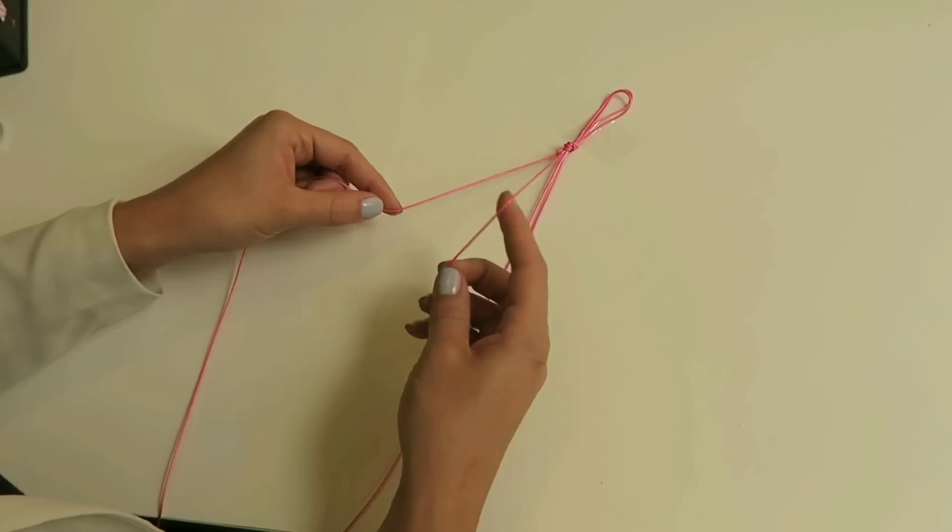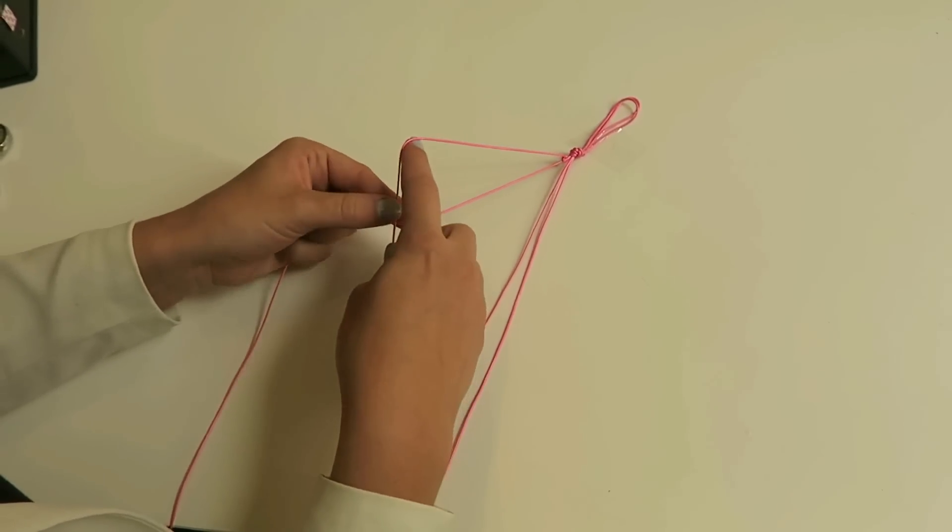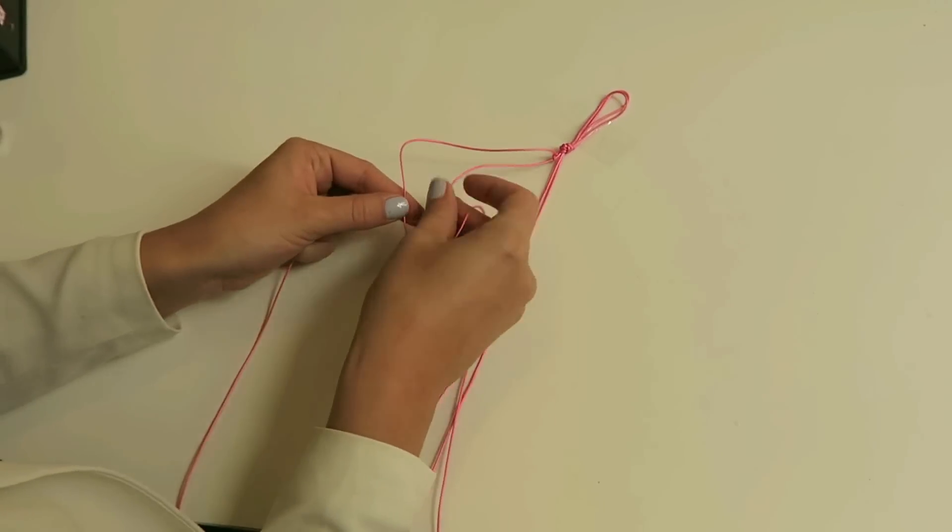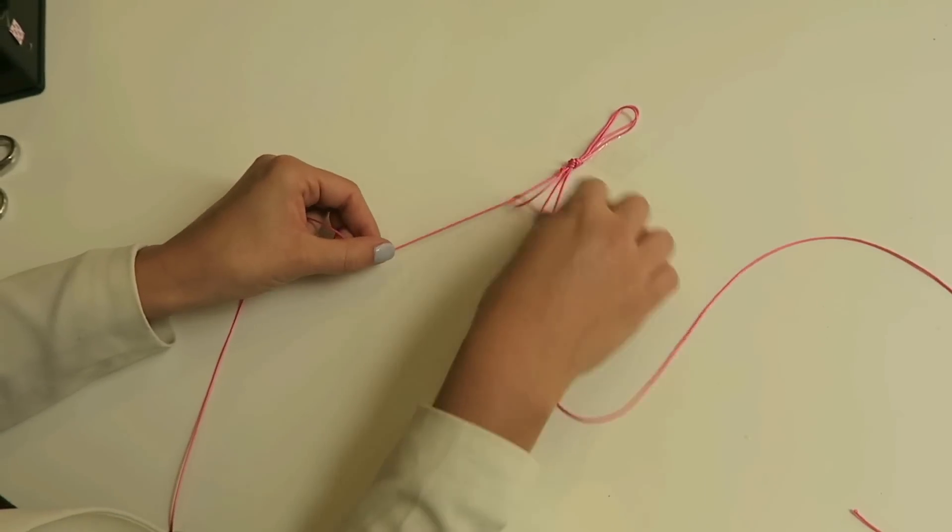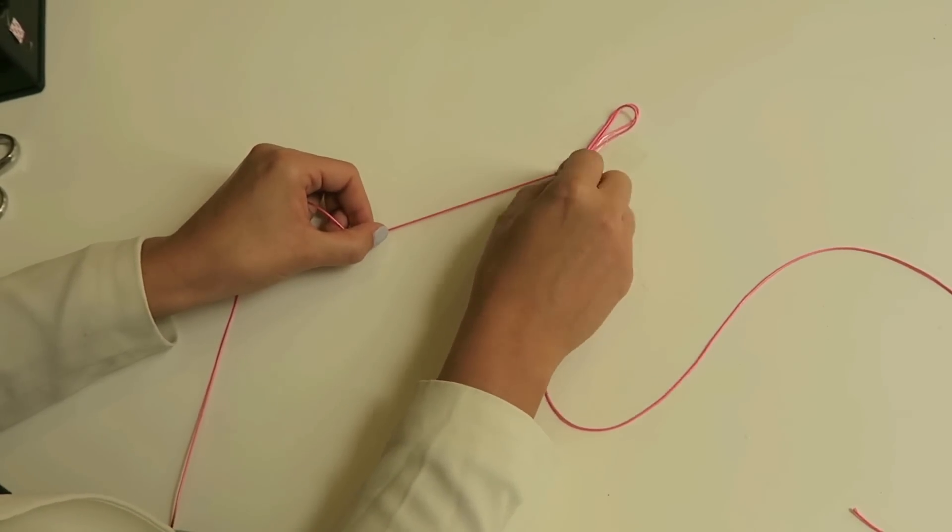So this is your first knot. And then you're gonna make another one on the same thread. So put it over and then under and then pull.